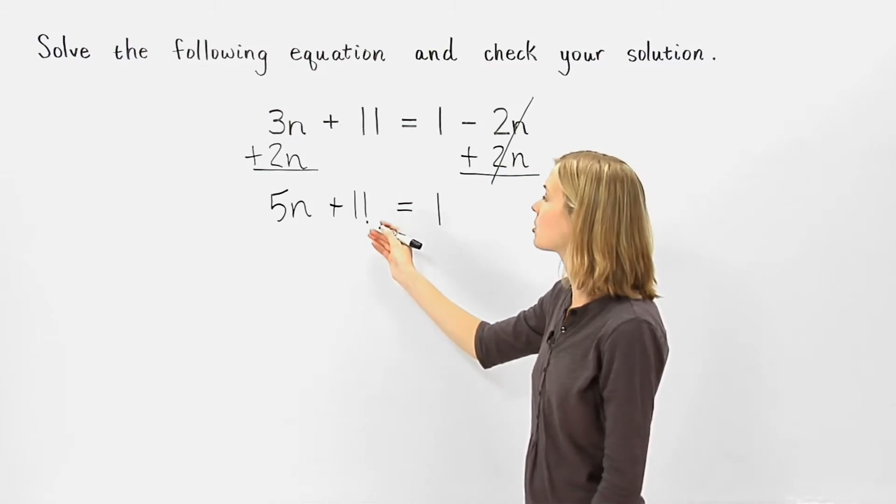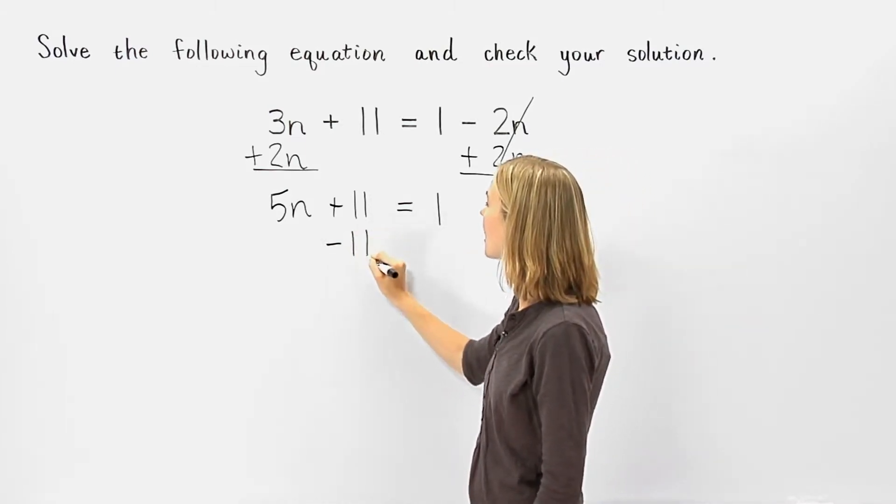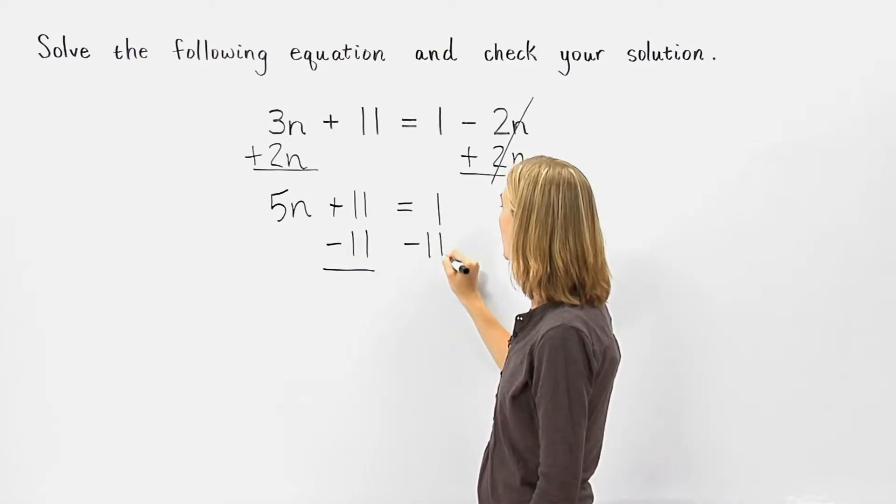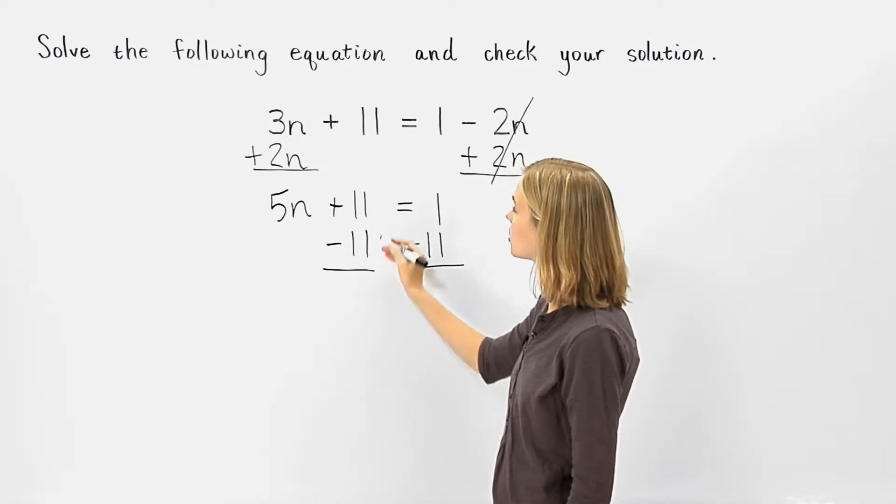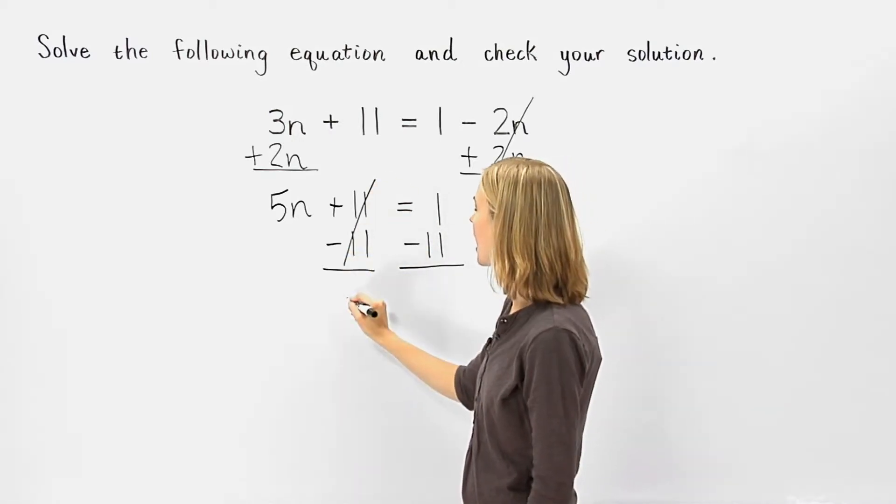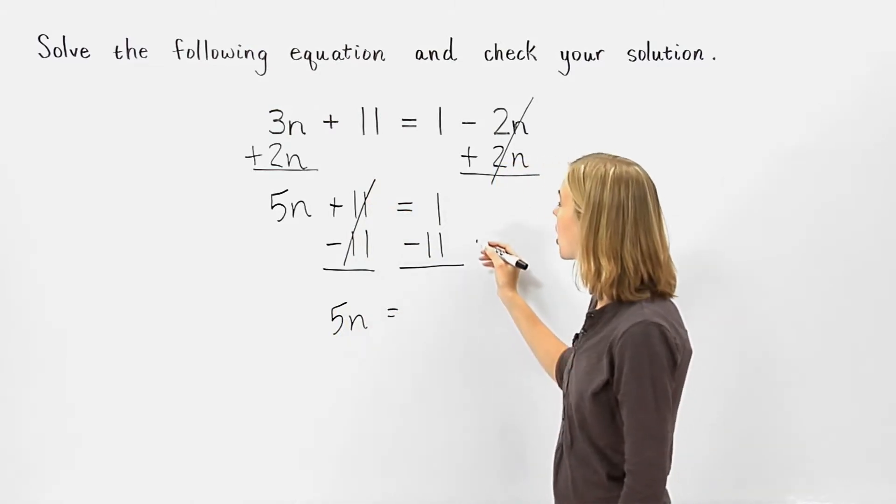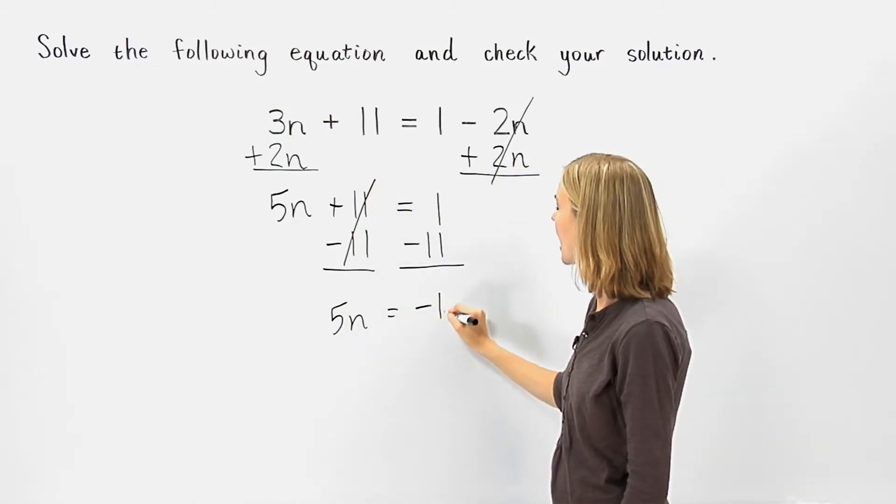Next, let's put our numbers together on the right side of the equation by subtracting 11 from both sides of the equation. On the left side of the equation, the positive 11 and negative 11 cancel each other out and we have 5n. And on the right side of the equation, 1 minus 11 is negative 10.